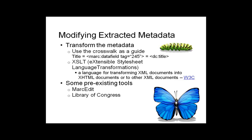So you've extracted the metadata from its siloed source and have it stored as some flavor of XML, but it's not necessarily the XML format you need for your repository. Perhaps you have MARC XML but need Dublin Core. This is where those repository metadata guidelines you put in place come into play. You need to create a crosswalk between the XML tags in your extracted metadata and the tags you need in your repository metadata scheme.